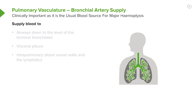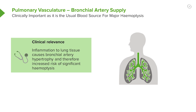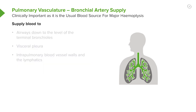The bronchial artery is completely different. It's an important source of blood for the lungs, and it's important clinically because it's often the source of blood for major hemoptysis. Being under higher pressure, it's much more likely to cause a significant hemoptysis than the low pressure pulmonary artery circulation. The bronchial arteries supply blood down to the terminal bronchioles, and also supply the visceral pleura, the intrapleural blood vessels, the walls of those vessels, and the lymphatics.